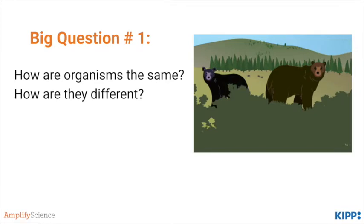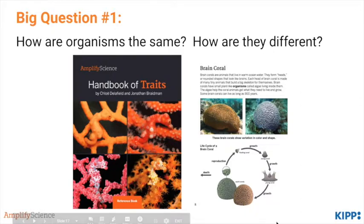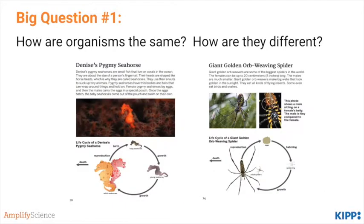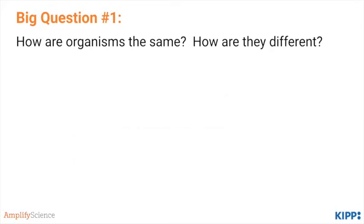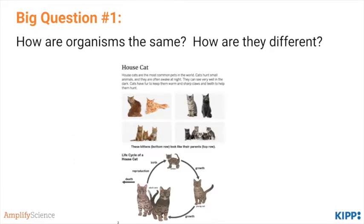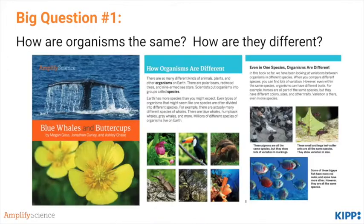The first big question is: how are organisms the same, and how are they different? Students start with a scavenger hunt in the handbook of traits, looking at the life cycles of different species that they choose. A kid might choose a life cycle of brain coral, a life cycle of pygmy seahorses, identifying similarities and differences. They might look at spiders or kitty cats and compare and contrast differences in their life cycles. Life cycles are not a central focus of the unit, but they are an important standard to hit.